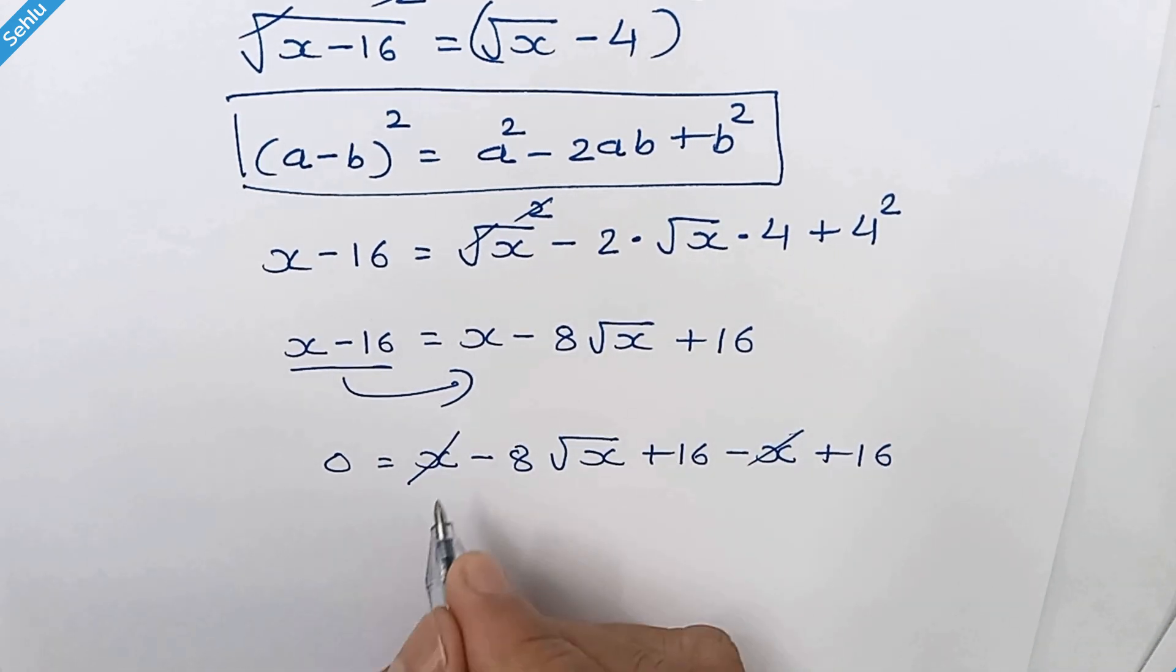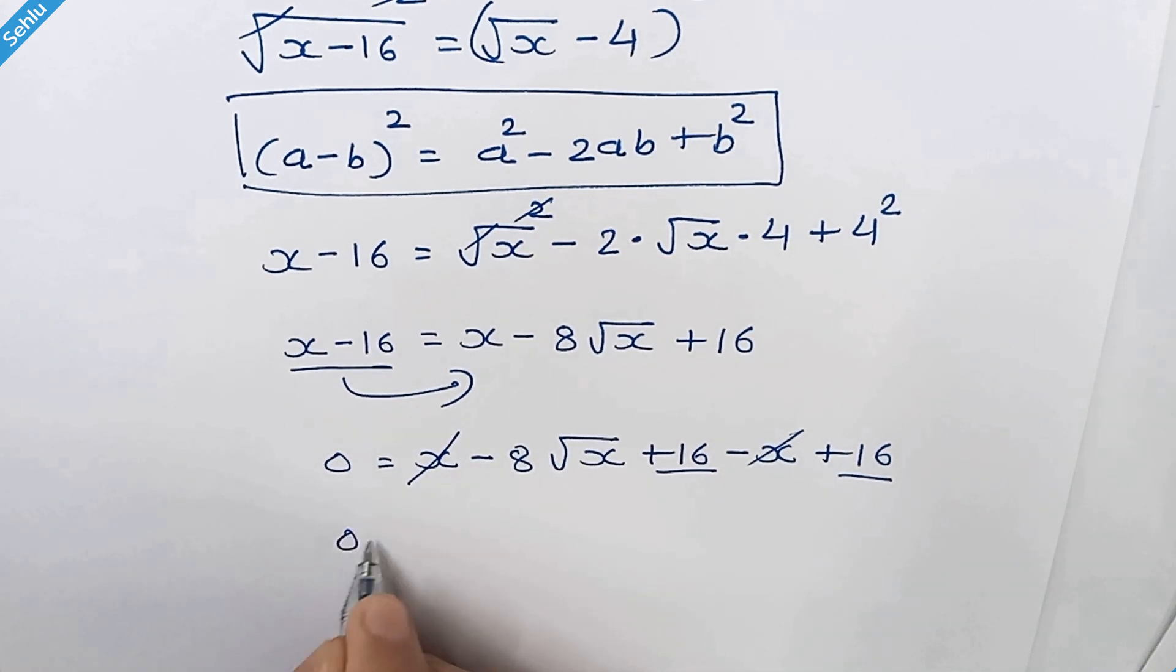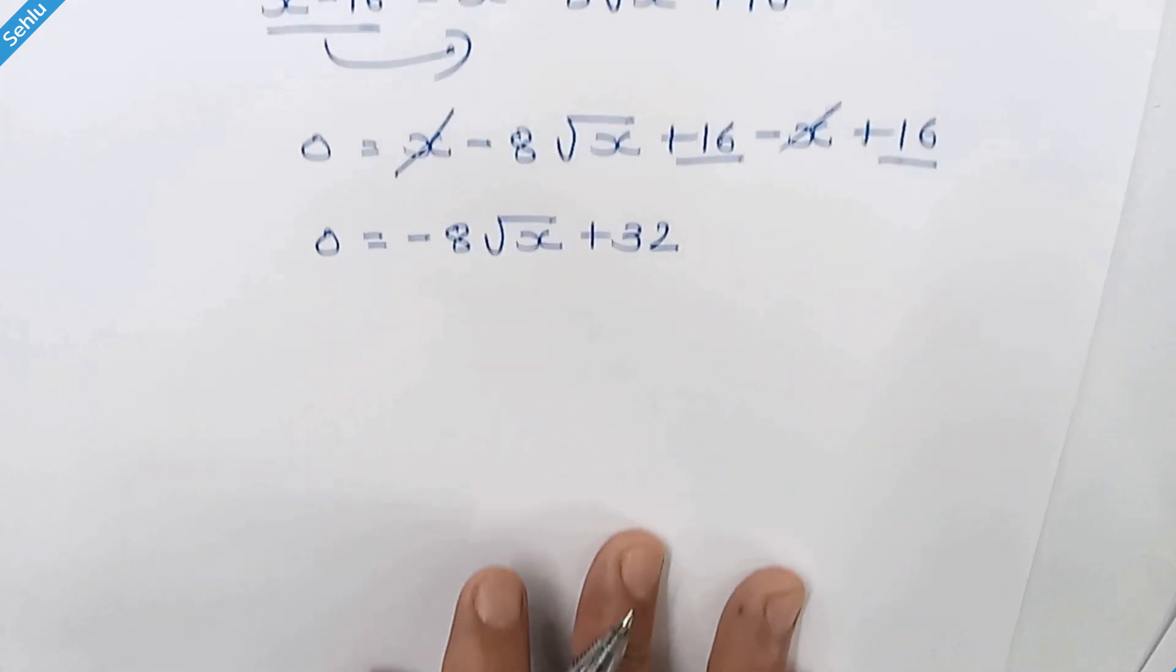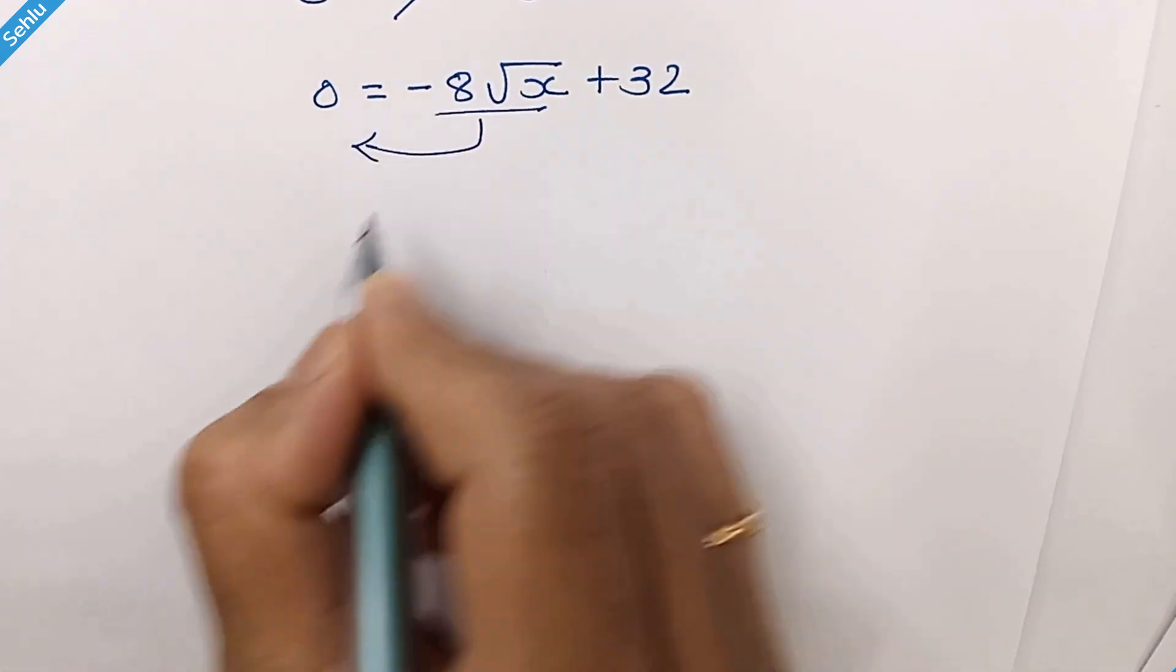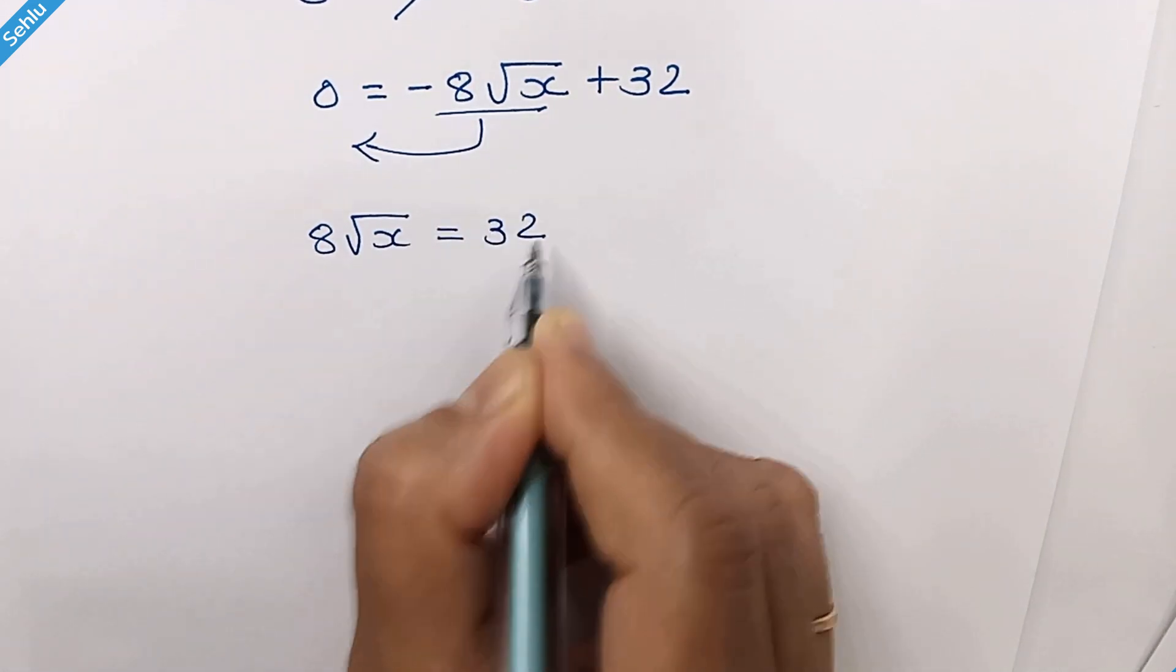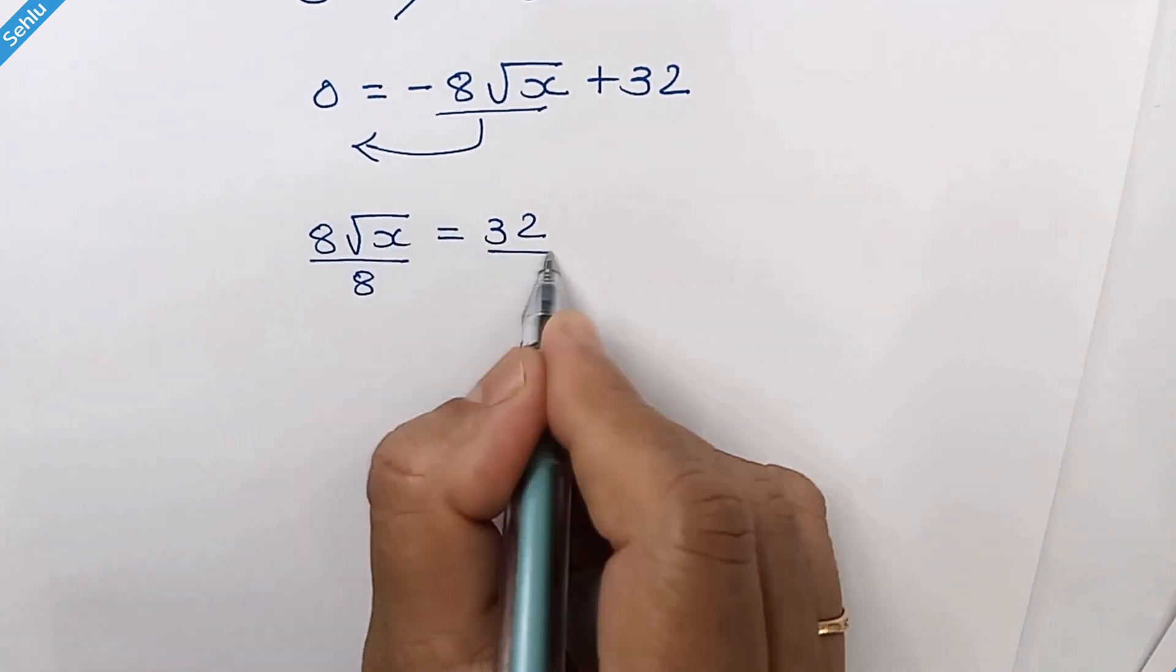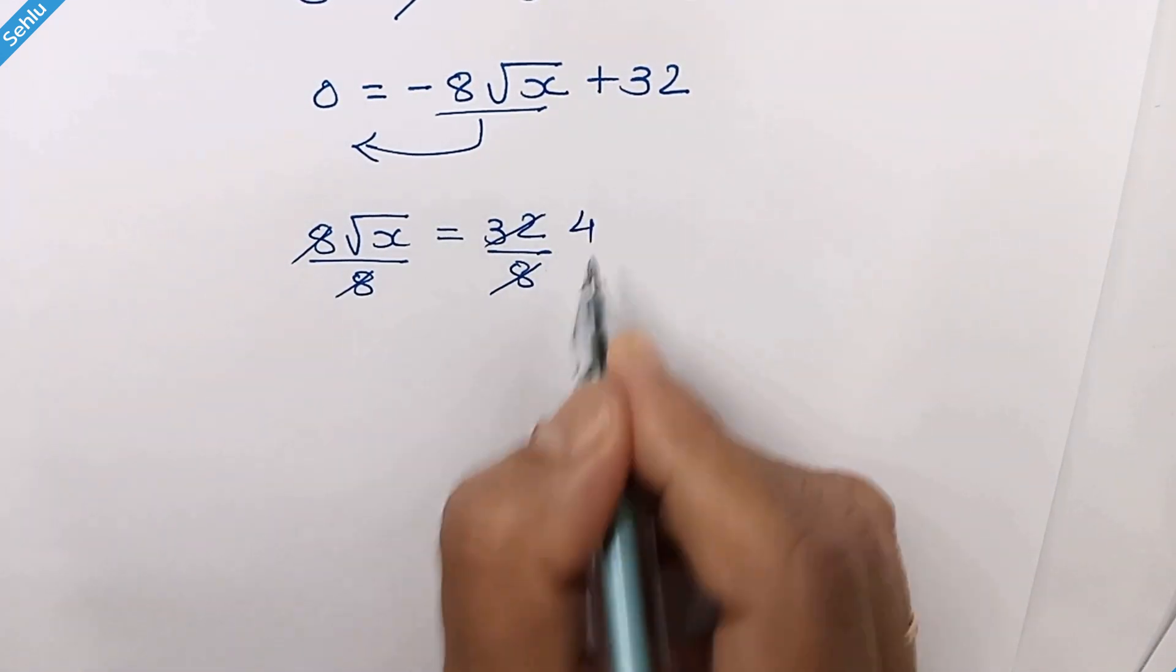This and this get cancelled out, and 16 plus 16 is 32. Move this part to the left hand side. If we divide by 8, these two get cancelled out and here we have 4.